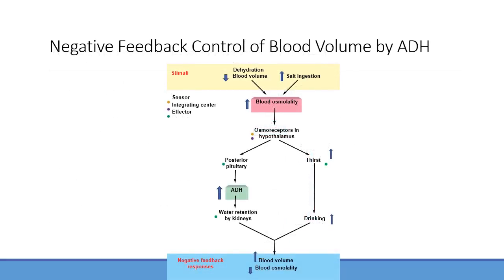With ADH: dehydration, decreased blood volume, or increased salt ingestion all increase plasma osmolality, triggering hypothalamic osmoreceptors to increase thirst and ADH release. More water is reabsorbed by the kidneys, blood volume goes up, osmolality comes down, and this feeds back to shut down ADH release.